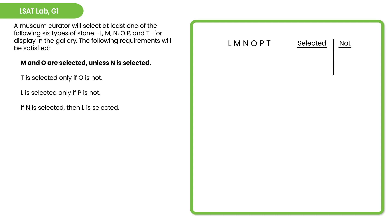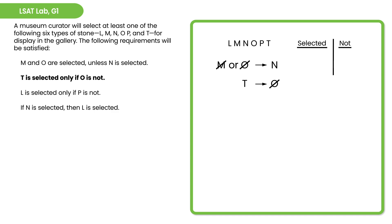In notation, we put N on the right side of the arrow and negate 'M and O are selected.' If either M is not selected or O is not selected, then N is not selected. For rule two, 'T is selected only if O is not selected' — 'only if' introduces the necessary condition, so O is not selected goes on the right and T is selected goes on the left. Rule three is the same but with L and P: if L is selected, then P is not selected. And in the last rule, 'if' introduces the sufficient condition, putting N on the left and L on the right.